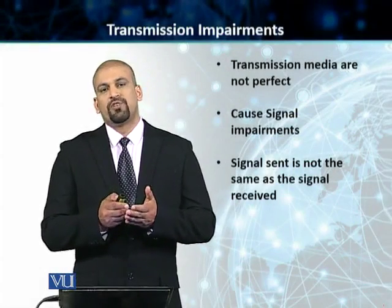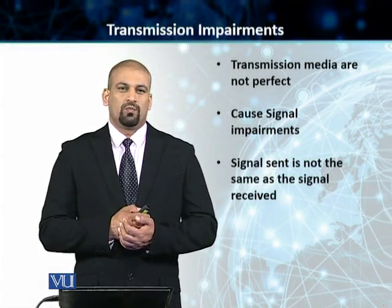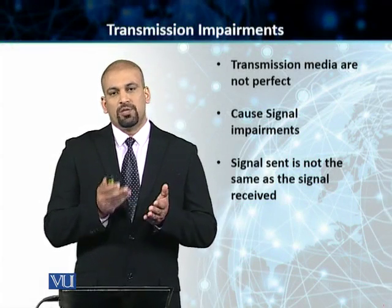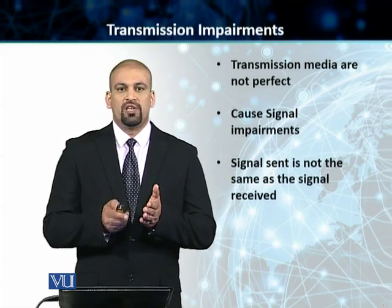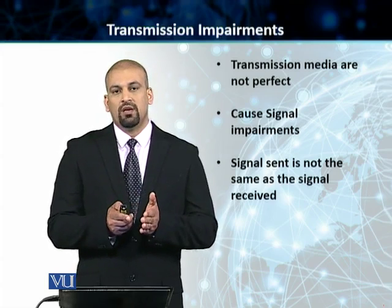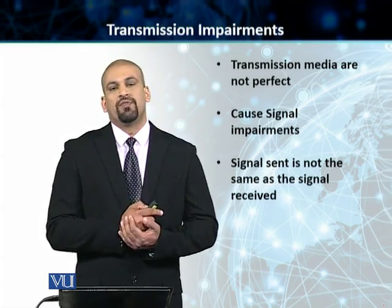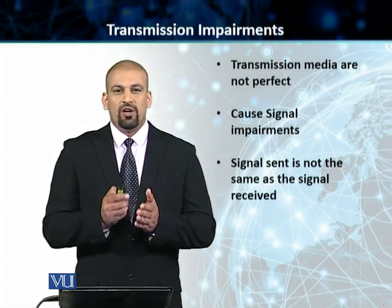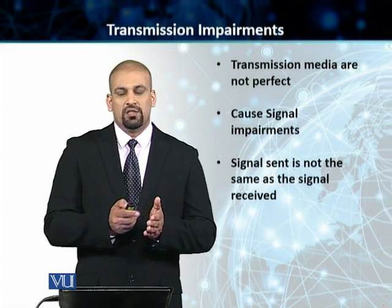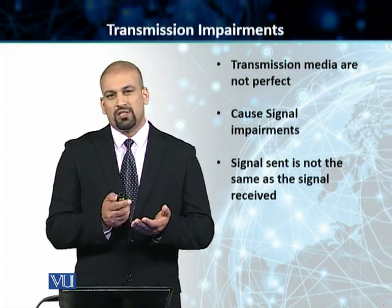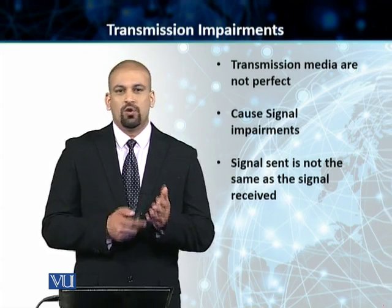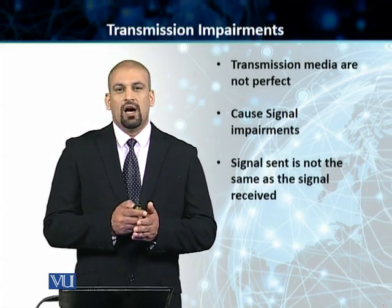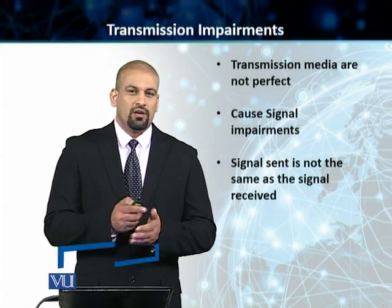We will talk about some transmission impairments. What do we mean by transmission impairments? The transmission medium — the medium we use to transmit data from point A to point B — is, by nature, not perfect. There are different kinds of losses that happen on this transmission medium. These losses can be in the form of heat, external factors, or catastrophic factors.